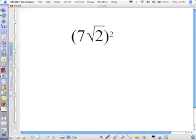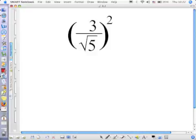Think about it. 98. 7 squared is 49. The square root of 2 squared is 2. And 49 times 2 is 98.